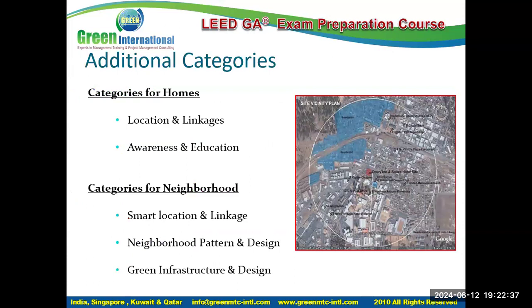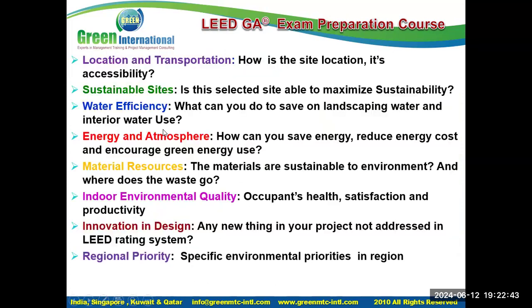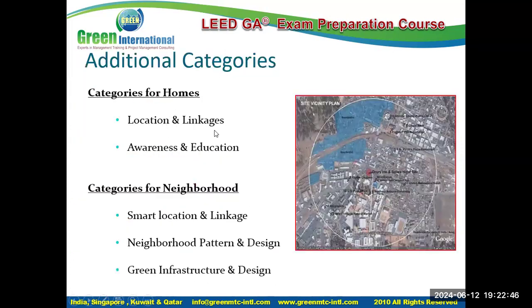There are additional categories specific to certain rating systems. For LEED Home, two additional categories apply: Location and Linkages, and Awareness and Education. For LEED Neighborhood Development, three additional categories apply: Smart Location and Linkage, Neighborhood Pattern and Design, and Green Infrastructure and Design. Exam questions may ask which category is not applicable to LEED New Construction.